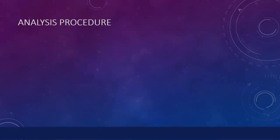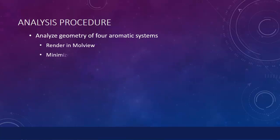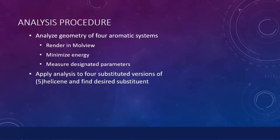As you saw earlier, the analysis procedure is spelled out in the lab background and instructions document. It includes analyzing the geometries of four different aromatic systems of increasing complexity using MoleView as a modeling tool. This includes rendering the molecules, minimizing their energy, and measuring bond lengths and angles. You will then apply this same analysis to four substituted versions of 5-helicene, the parent molecule for the spring design.